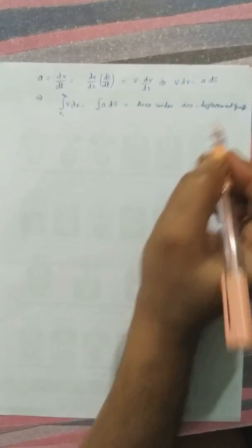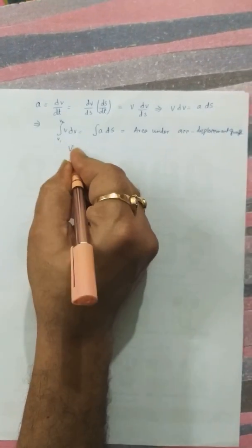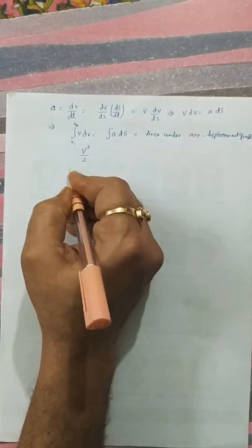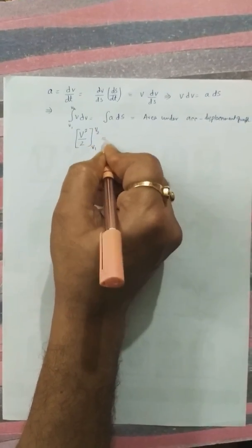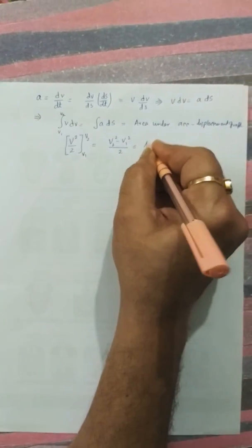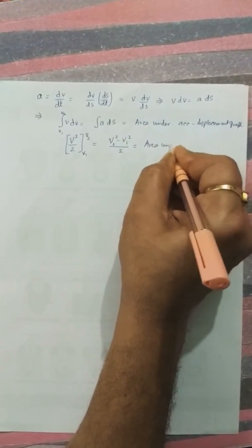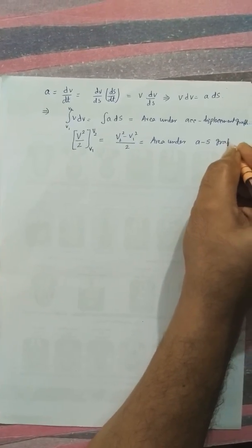The area under acceleration versus displacement graph represents V square by 2 from V1 to V2, which is V2 square minus V1 square by 2. This is area under acceleration versus displacement graph.